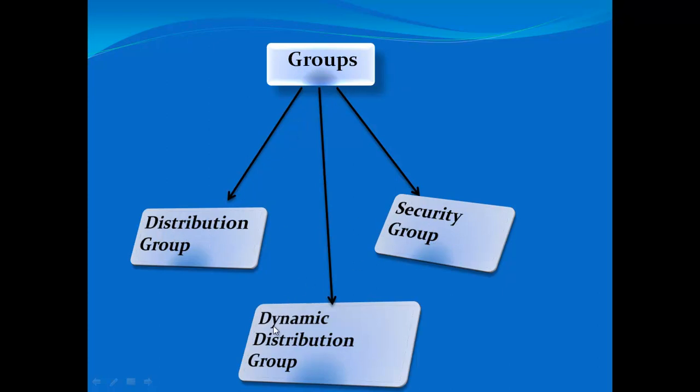A distribution group is used to distribute email to the members of a particular group. For example, if you have an HR department or an accounts department and you want all members to receive an email, you create a distribution group and send email to it. All members of that distribution group will receive the email, so instead of sending to individuals you send to the group.